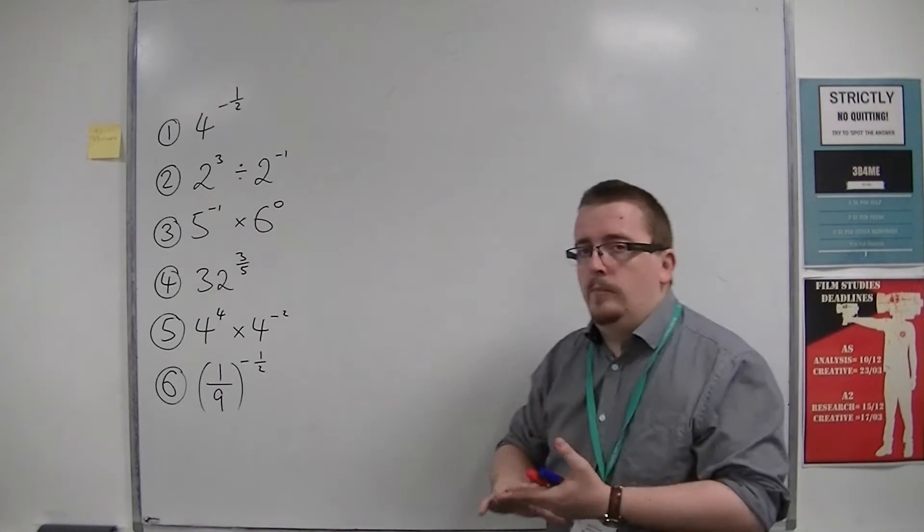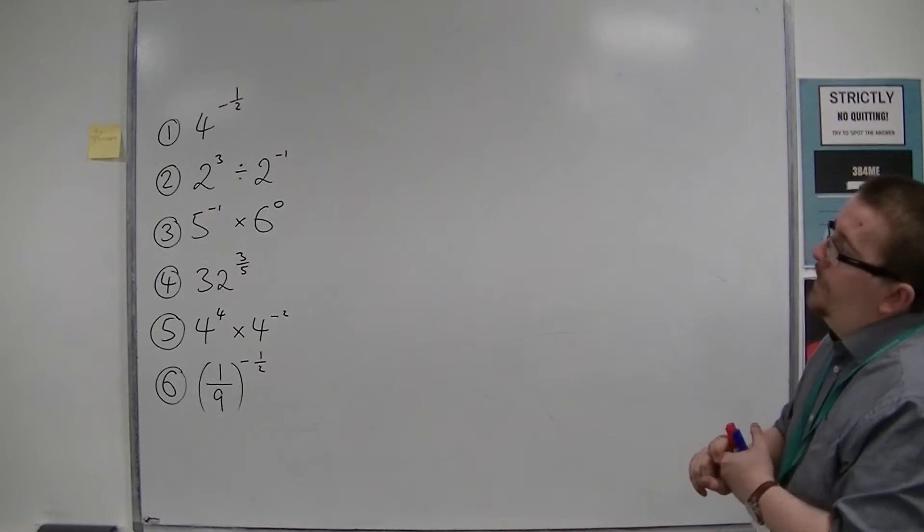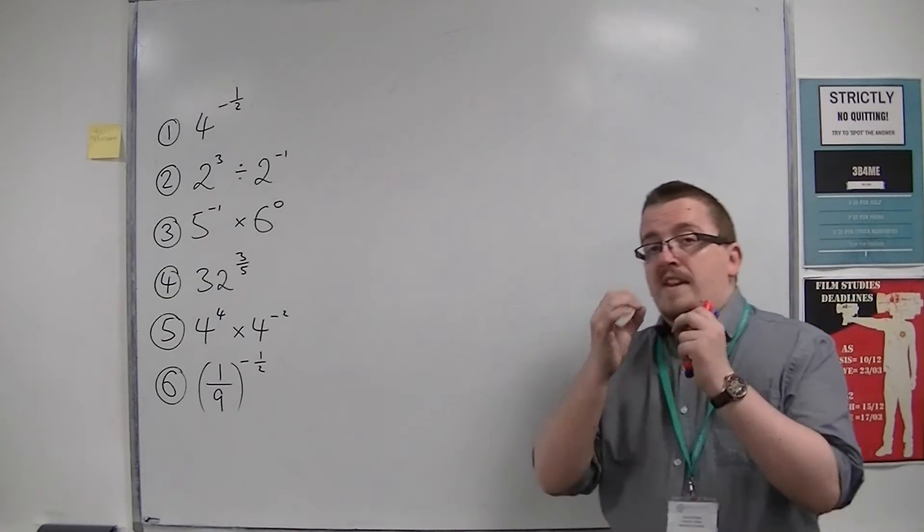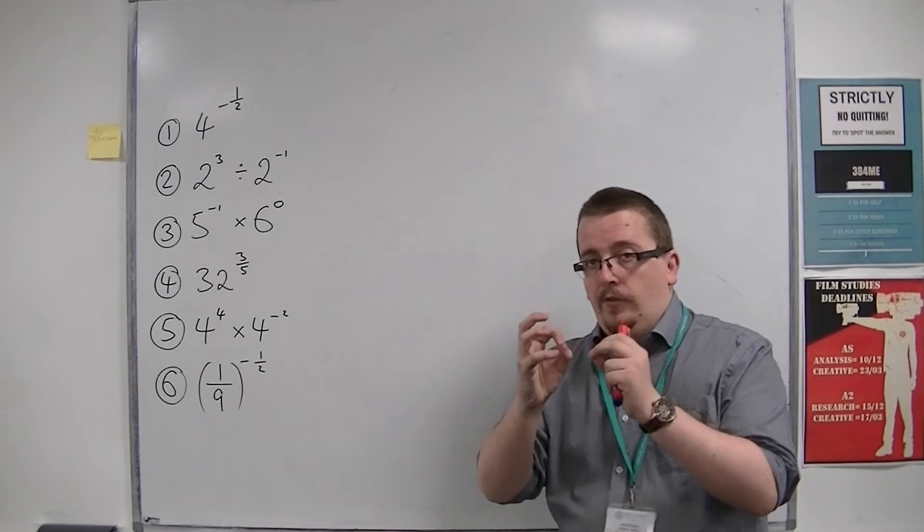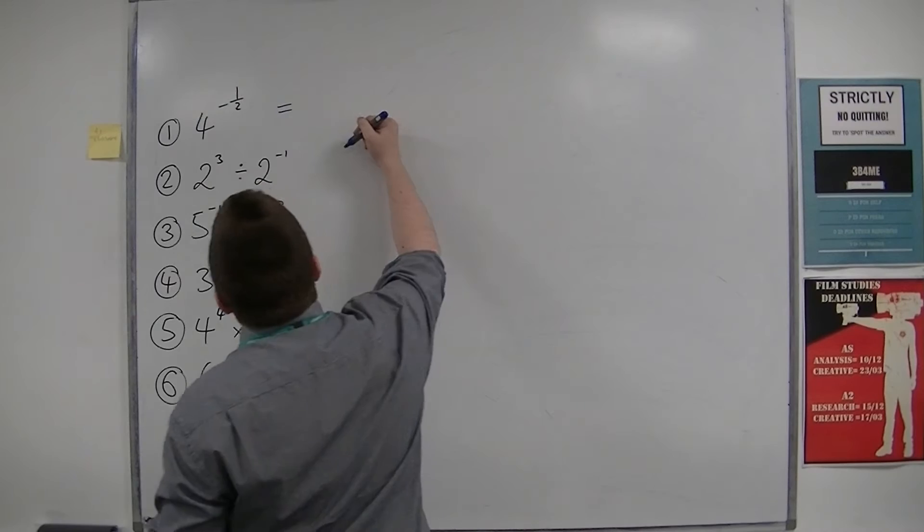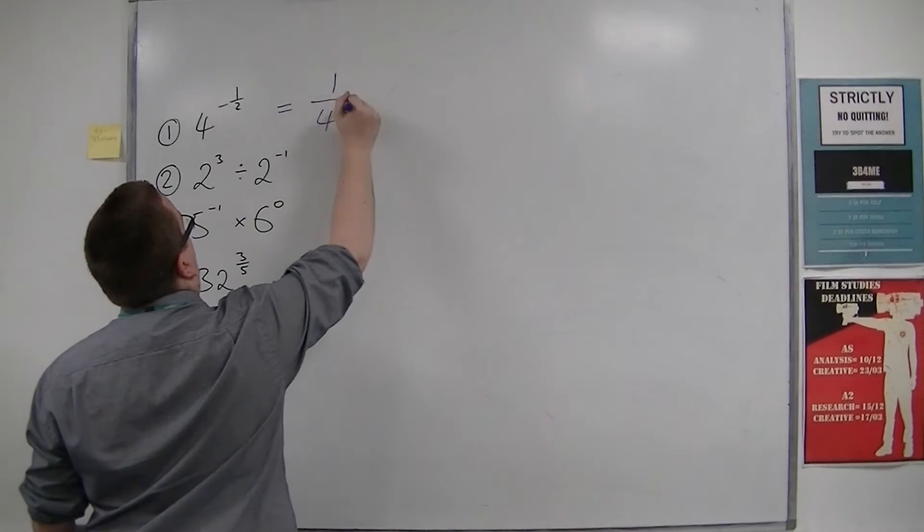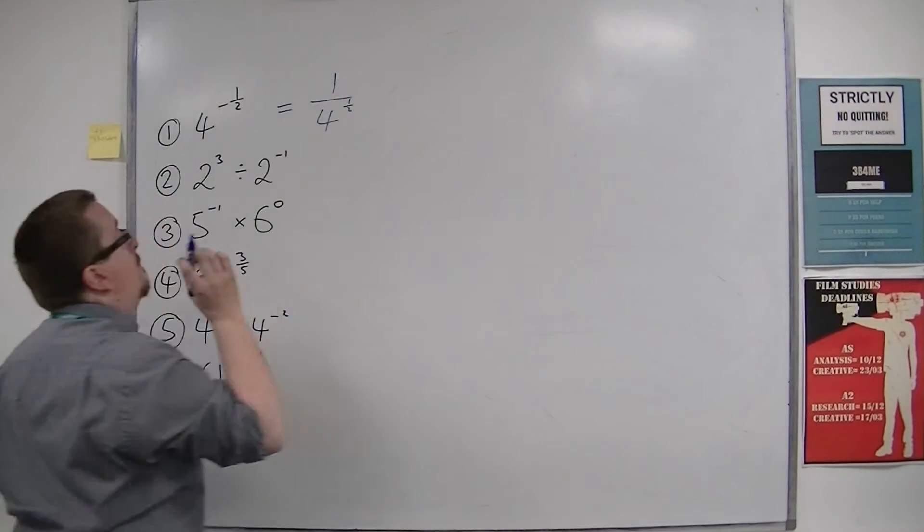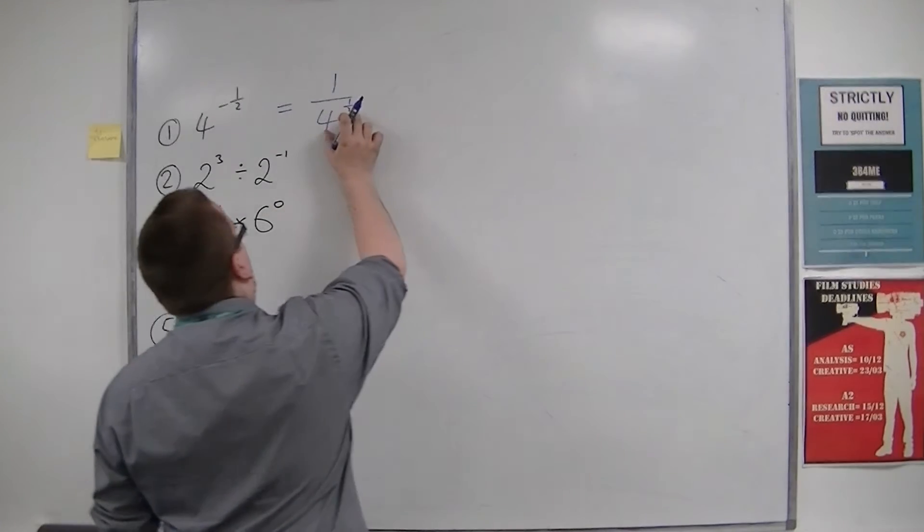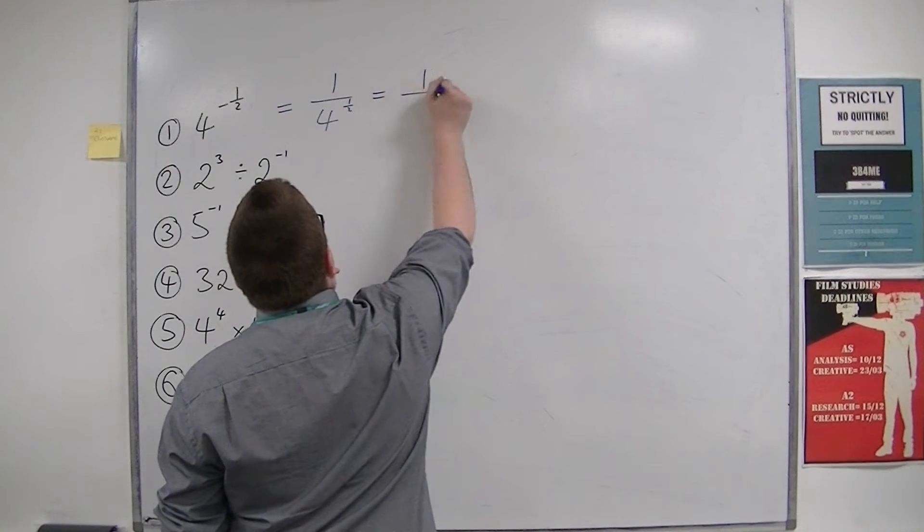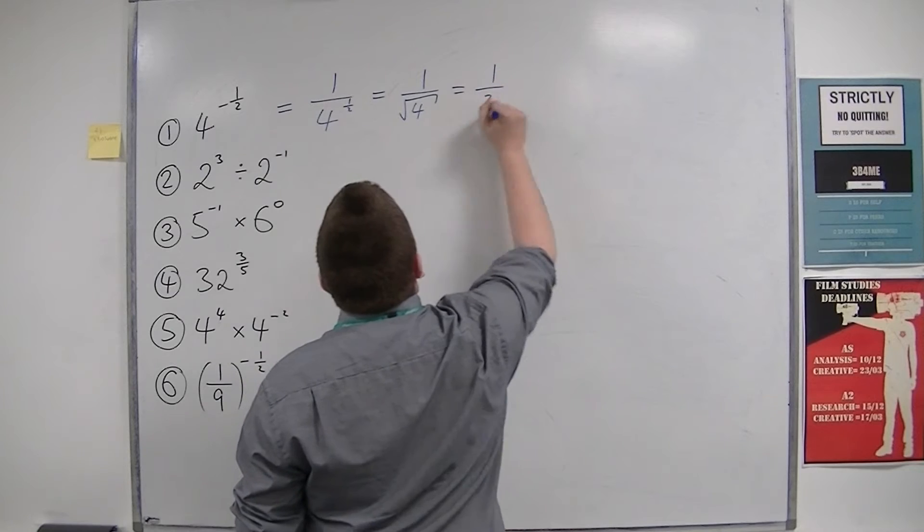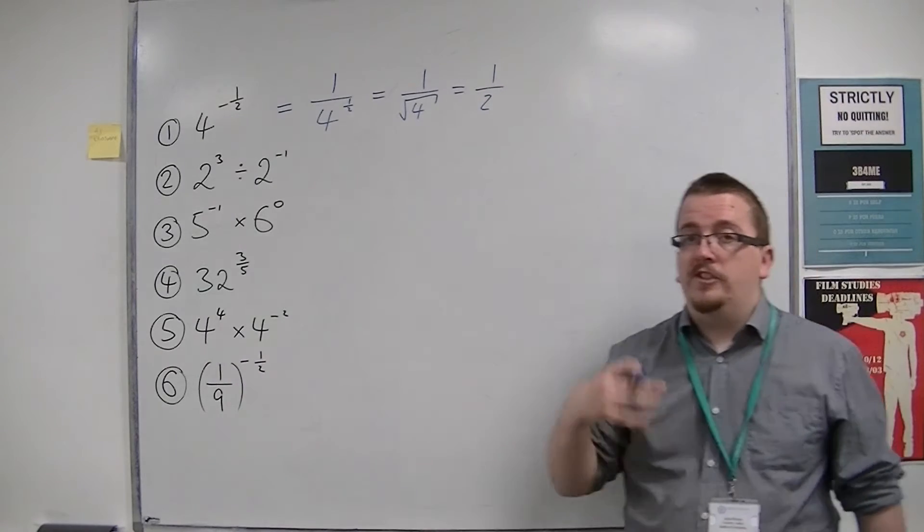So I'm going to go through these examples. This first one, 4 to the power of minus a half. Usually I deal with the negative index first, with the negative sign. So 4 to the power of minus a half would be 1 over 4 to the half. That minus sign means 1 over. Now the 4 to the half, the half means square root, so that's 1 over the square root of 4, which will be 1 over 2. So the first one simplifies to 1/2.